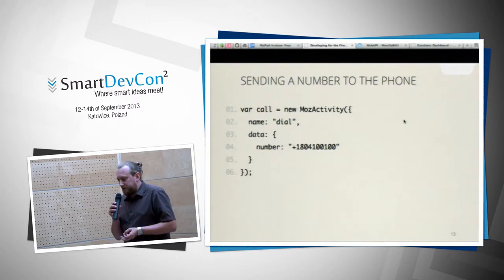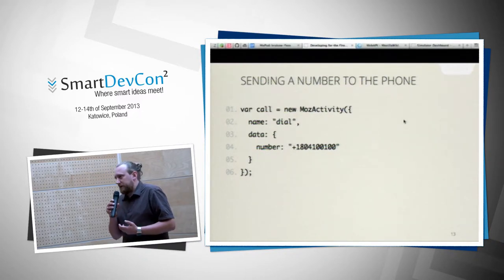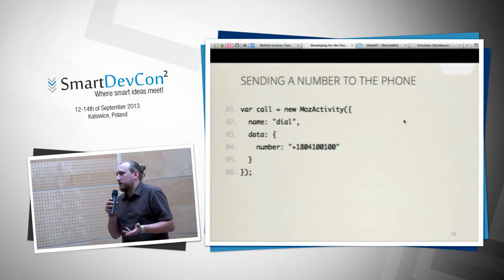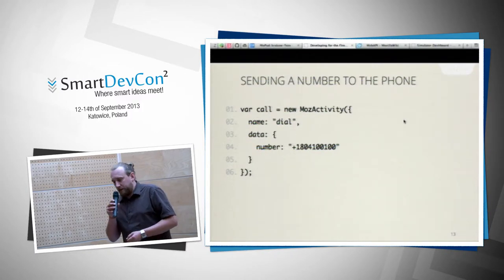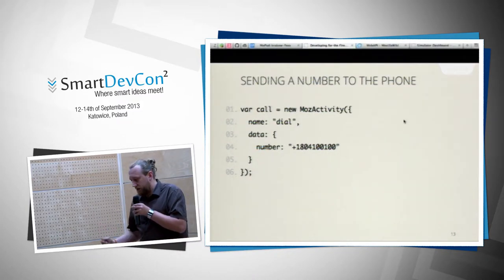To send a number to the phone, you create a MozActivity with the name 'dial', and the system provides a list of applications that can make calls — like Skype, the dial app, or your own app if you register for the dial MozActivity. After the user hangs up, your application resumes.